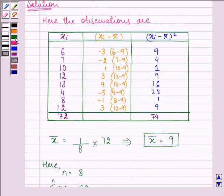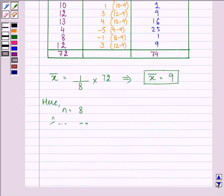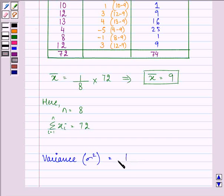So, we have the variance as 1 upon n, that is 8, summation xi minus mean the whole square, and that is 74.